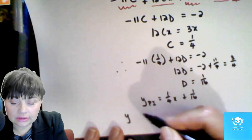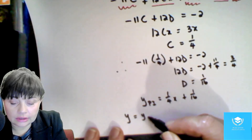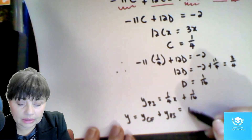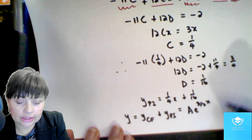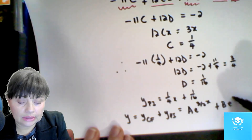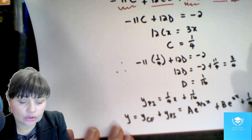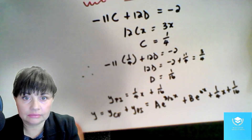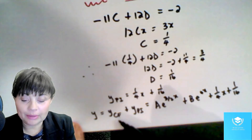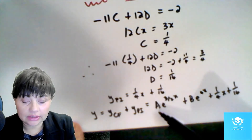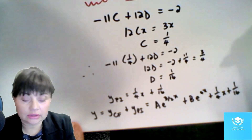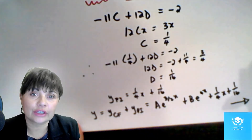Which means our final answer, y, is going to be the complementary function plus your particular integral, which is Ae^(3/2 x) + Be^(4x) + (1/4)x + 1/16. So you see that your complementary function plus your particular integral — this is the complementary function that we found earlier, and that is our particular integral — and this here is the general solution of the differential equation.